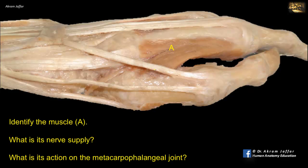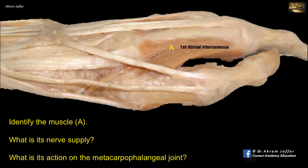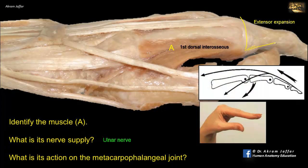Identify the muscle. What is its nerve supply, and what is its action on the metacarpophalangeal joint? This is the first dorsal interosseous muscle. Note that it is located between two metacarpal bones, and it is bulky and bicipital, arising from both adjacent bones, like other dorsal interosseous muscles. Like all the interossei, whether dorsal or palmar, they are all supplied by the deep branch of the ulnar nerve. The first dorsal interosseous muscle acts on the index finger, abducting it at the metacarpophalangeal joint. The muscle is also attached to the extensor expansion on the dorsum of the digit, so it can cause flexion of the metacarpophalangeal joint as well as extension of the interphalangeal joints.